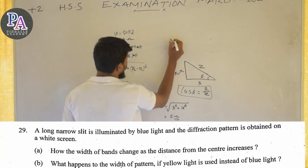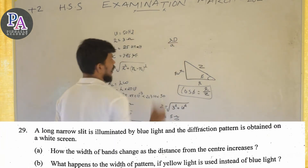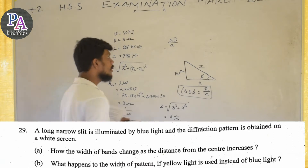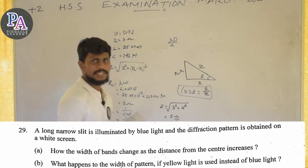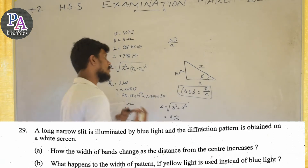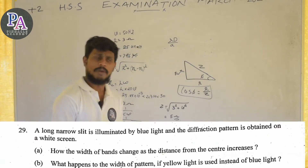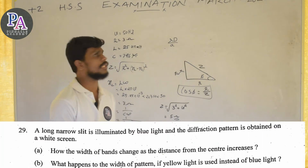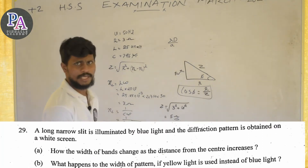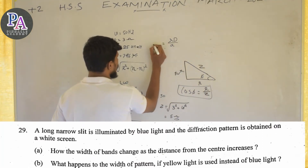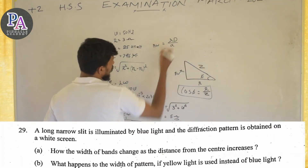The fringe width is lambda times D divided by d. For the central maximum, the band width is 2 lambda D, and for other bands the width is lambda D divided by d. The bandwidth relation gives us lambda D over d.